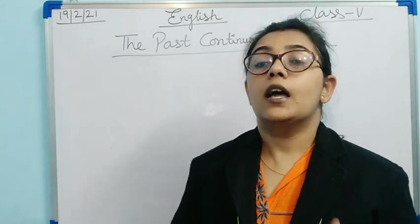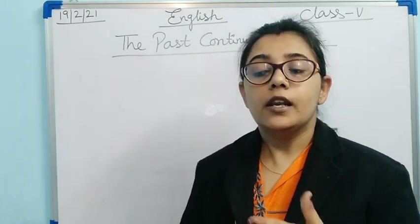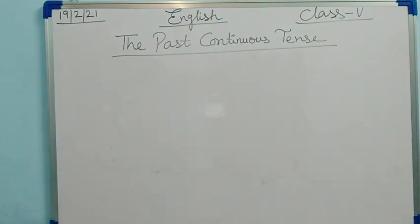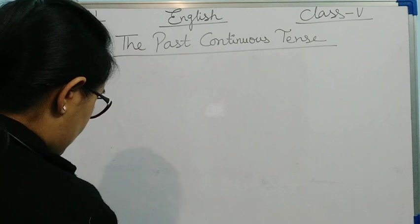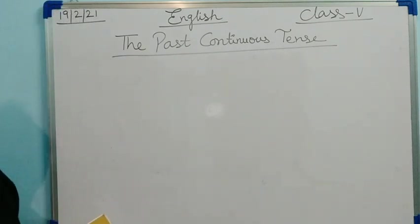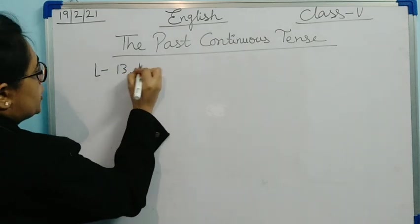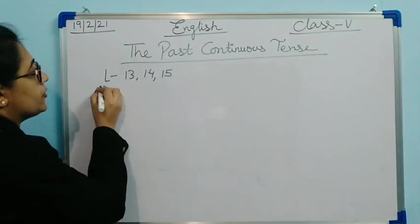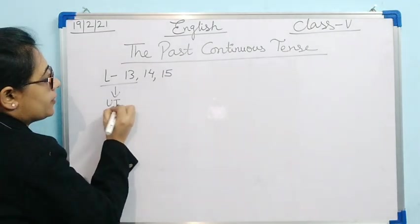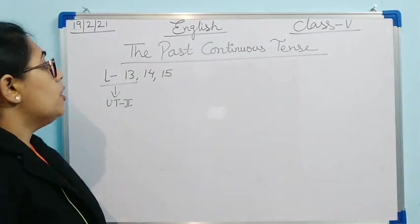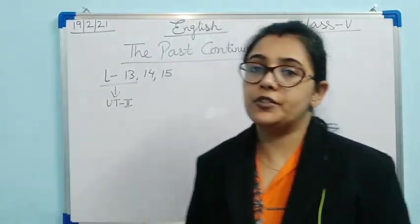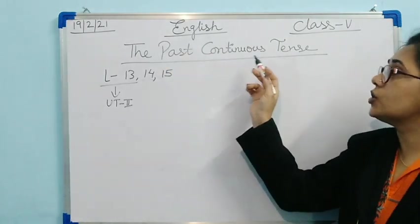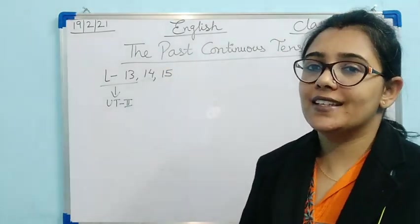We have already completed the literature course and the writing skill section for our annual examination. Now let's move on to the grammar section. In grammar we have three chapters: lesson 13, 14, and 15. Lesson 13 is from our unit test course — unit second. We are left with two lessons: lesson 14 and 15. Today we are going to start lesson 14, which is the past continuous tense.